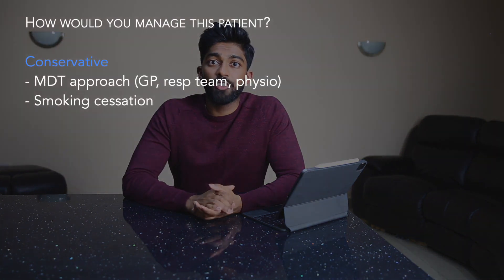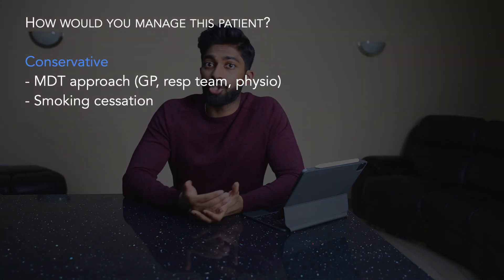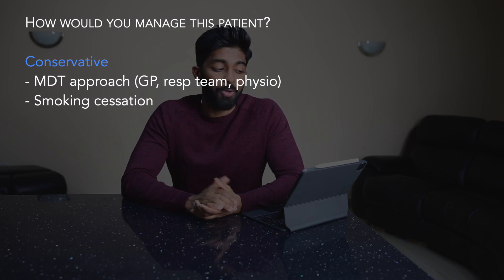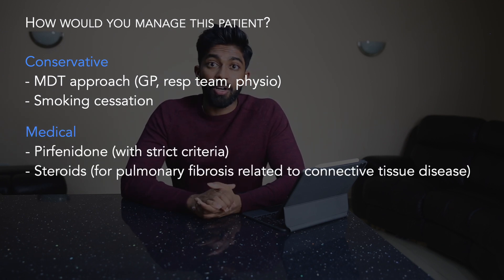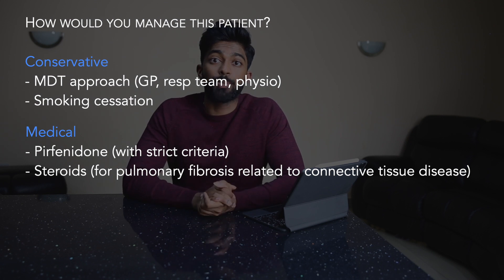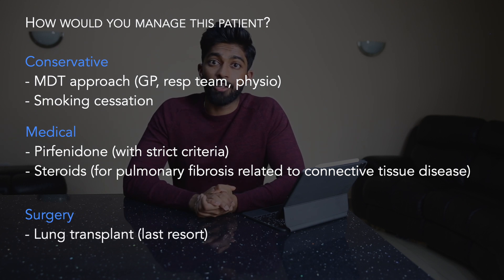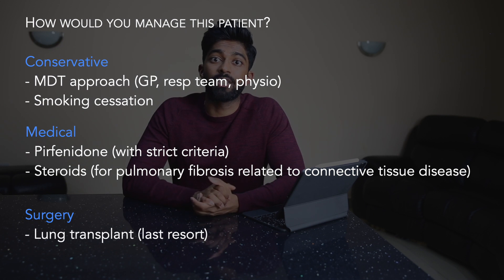For management, classify your answer. Conservative management involves an MDT approach with the GP, respiratory team, and physios for chest physio, plus smoking cessation if the patient is still a smoker. Medical therapies include pirfenidone, approved in the UK and US for idiopathic pulmonary fibrosis with specific criteria, and steroids for pulmonary fibrosis related to connective tissue disease. Surgical treatment includes lung transplant, usually kept as a last resort for very young patients with severe disease.